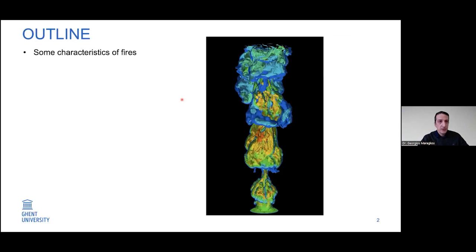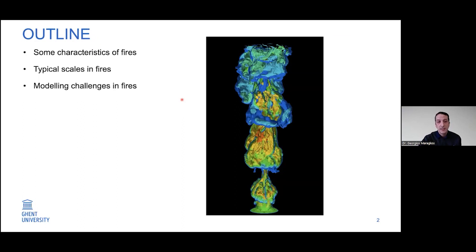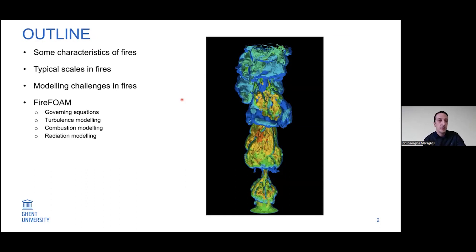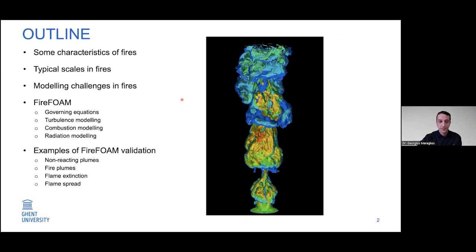A brief outline of the presentation: I will discuss some characteristics that we have in fires as opposed to other types of flows like jet flames. We'll touch on the different scales involved in fires and discuss some modeling challenges. I will give a brief overview of FireFoam — the governing equations and sub-scale models for turbulence, combustion, and radiation. I will also give examples of FireFoam validation involving non-reacting plumes, fire plumes, flame extinction, and flame spread, ending with a small summary.